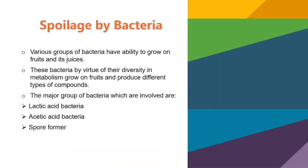Spoilage by bacteria is a very common cause of spoilage of fruits, and various groups of bacteria have the ability to grow in fruits and juices. These bacteria, by virtue of their diversity in metabolism, grow on fruits and produce different types of compounds. The major groups involved are the lactic acid bacteria, acetic acid bacteria, and spore formers.